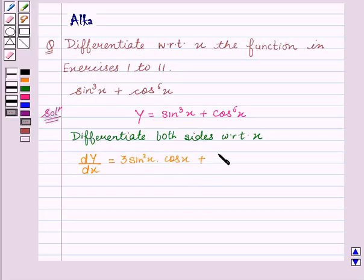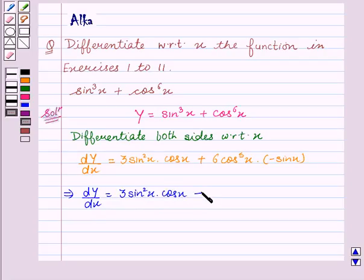This implies dy/dx = 3sin²x·cosx - 6sinx·cos⁵x.